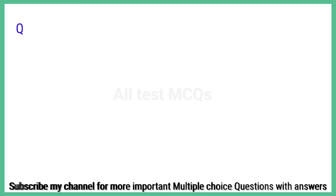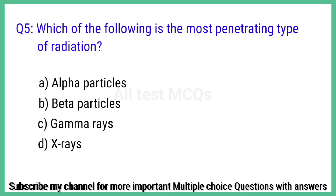Question number 5. Which of the following is the most penetrating type of radiation? The right answer is option C: Gamma rays.